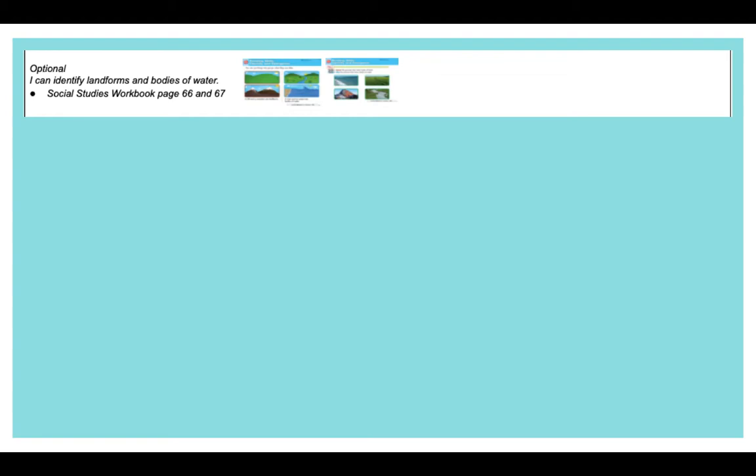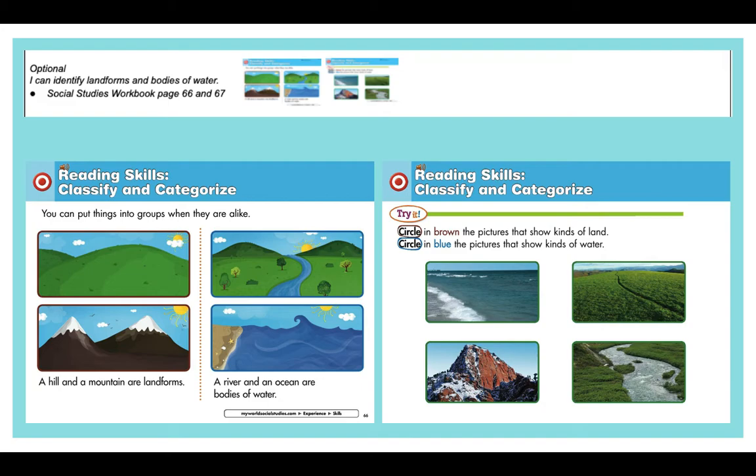All right? Then your last lesson is page 66 and 67. It is an extra little activity that's kind of testing your reading skills and testing your listening skills. So here's what it says. You can put things into groups when they are alike. A hill and a mountain are both landforms, like we talked about in the first lesson. A river and an ocean are both bodies of water, like we talked about in the second lesson.